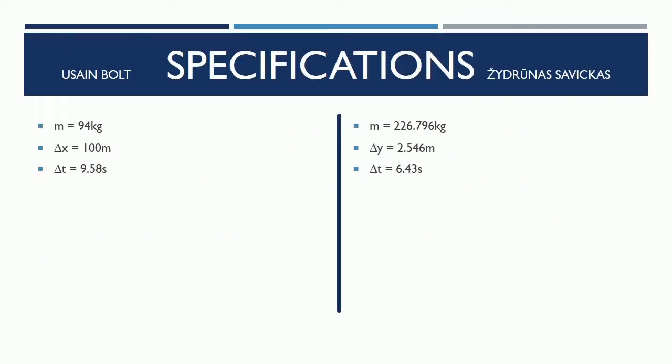Specifications: Usain Bolt's mass is 94 kilograms, the displacement is 100 meters, and the change of time is 9.58 seconds.